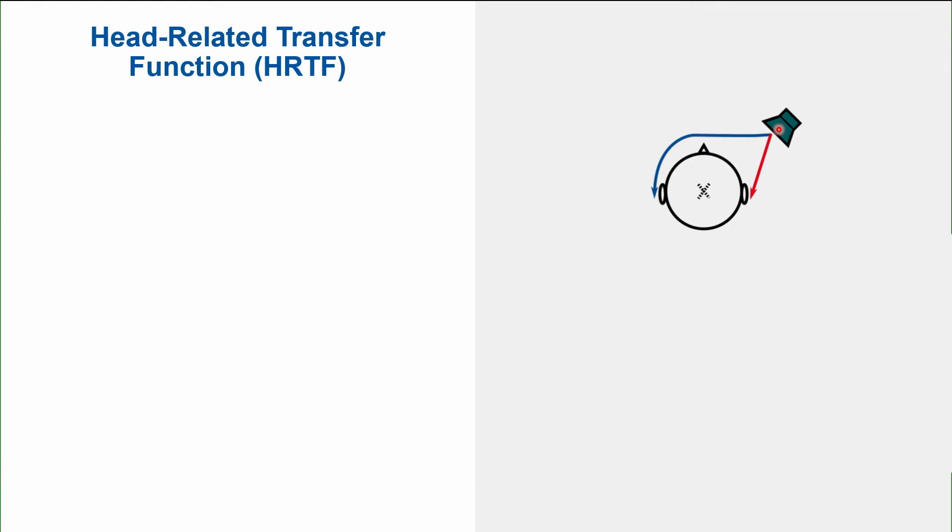To measure what happens on the path from the source to our ears we can measure the so-called head-related transfer function. To do so, we usually place a loudspeaker, a measurement loudspeaker, at a certain position in the room, and then we place miniature microphones or we use a dummy head for this recording at the entrances of the ear canals. And then we can measure what happens on the path from the loudspeaker to our ears.